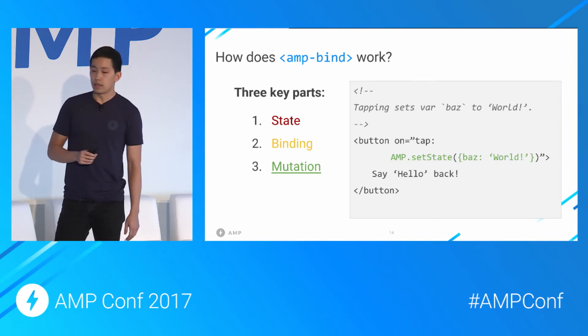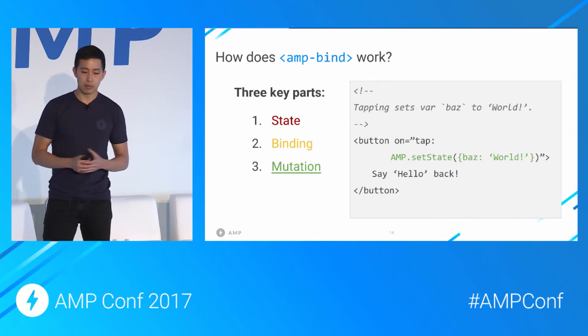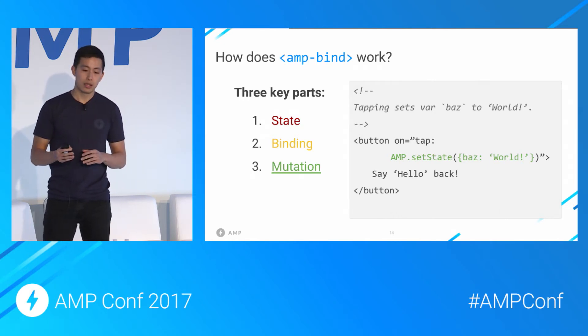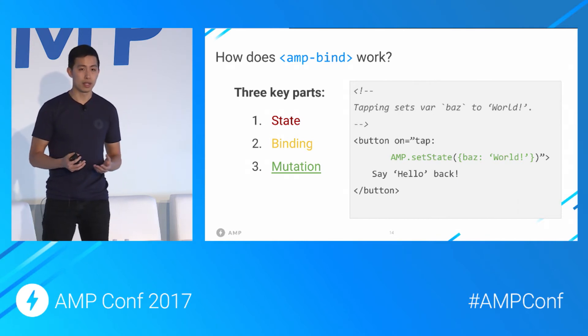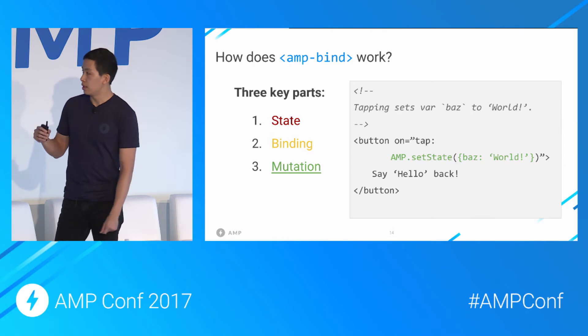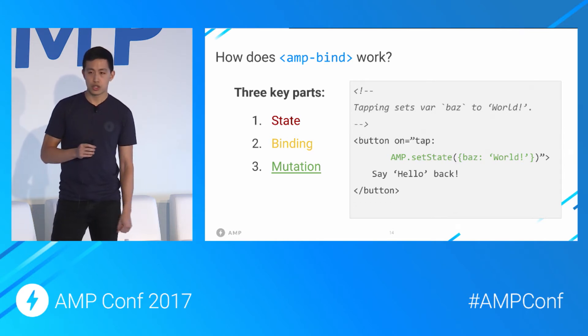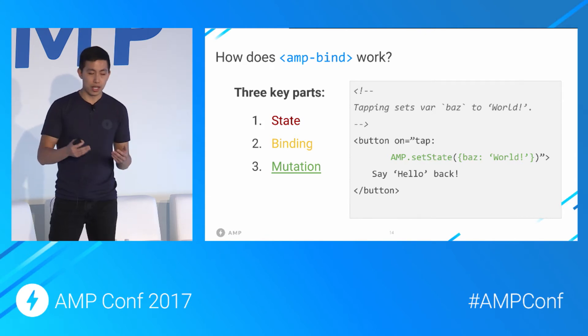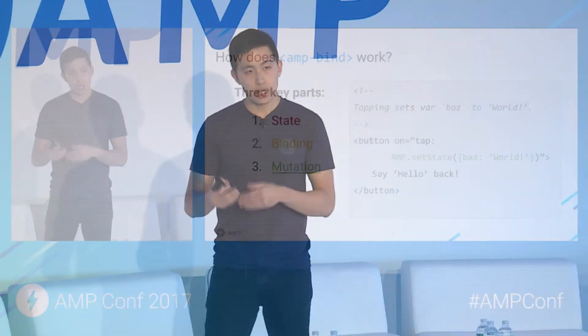The third part is mutation, or more specifically, state mutation. amp-bind introduces a new action, amp.setState, which takes its argument and merges it into the document-level state. Since expressions can reference the state, changing the state changes the resulting value of those expressions. And changing the resulting value of the expressions changes the state of the element that is bound to it.